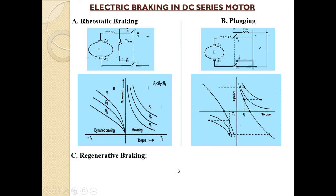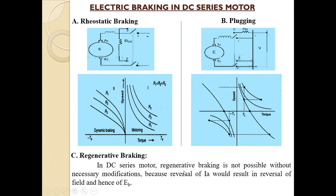The last method is regenerative braking for the DC series motor. Regenerative braking is not possible in a DC series motor without necessary modifications, because reversal of armature current would result in reversal of the field and hence of the back EMF. Due to the series connection of the armature coil and field coil, regenerative braking is not straightforward. Thank you all.